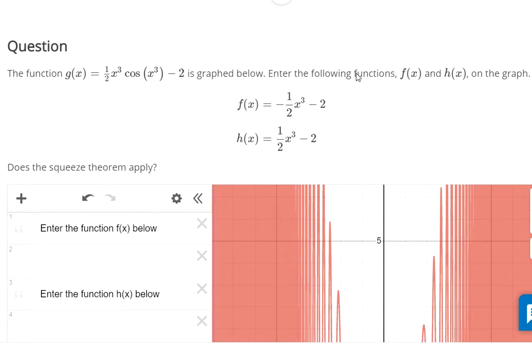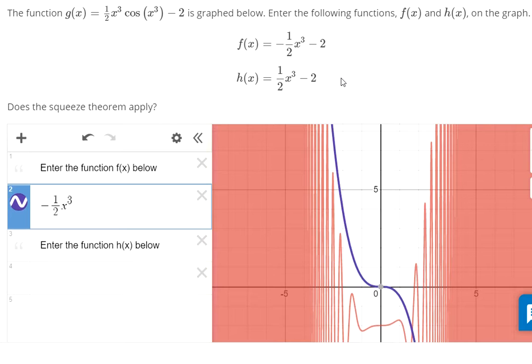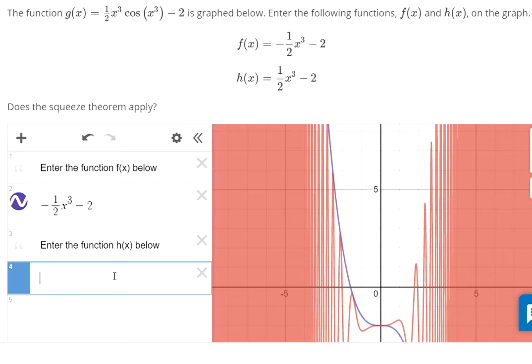They give us the function g of x. This is the g of x graph here. We're supposed to enter the functions on the graph, so it looks like they've given us what they think f of x and h of x should be. I'm just typing everything in. If you're wondering what keys I'm pushing: I'm pushing one, slash key for division, two, hitting the right arrow to get out of the denominator, x, holding shift and pressing six to get the caret key, then three, then pressing the right arrow to get out of the exponent, and then minus two.